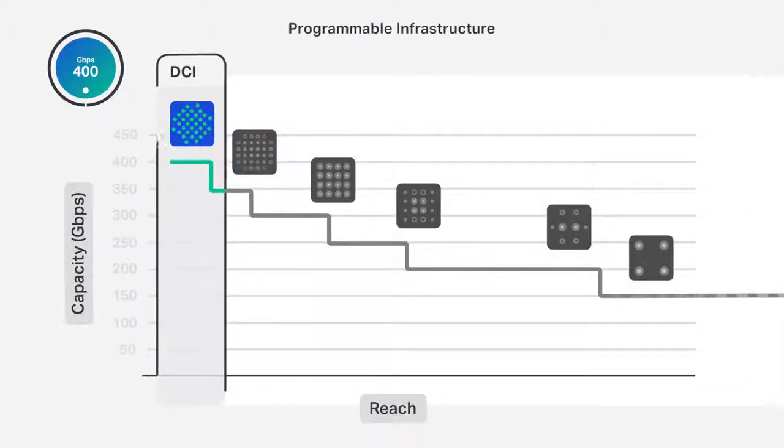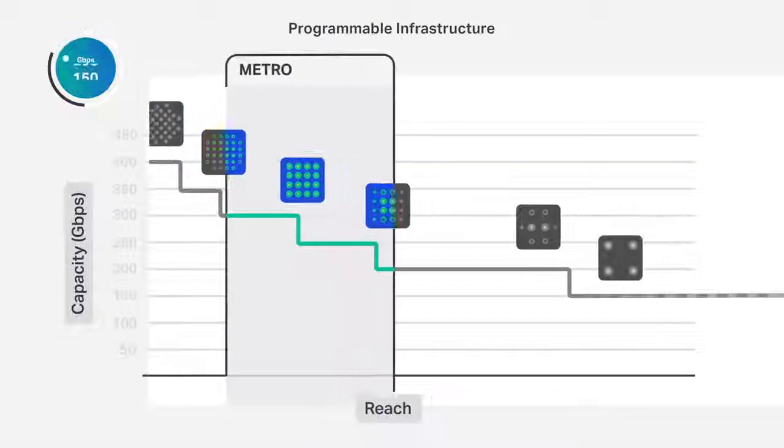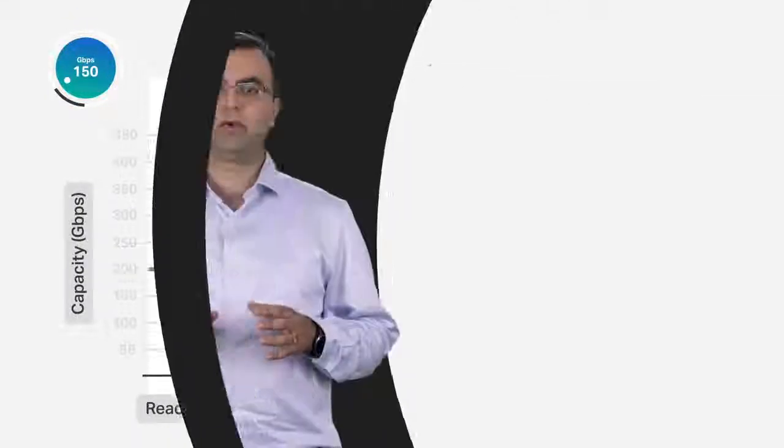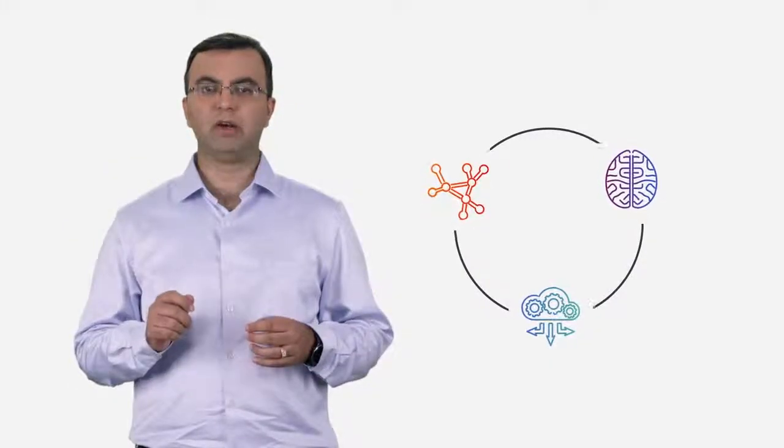This means that operators can tune the channels to optimal capacity for an application from DCI to Metro to Trans-Pacific or submarine applications. The ability to gain real-time access to network performance data and tune a channel to optimal capacity for that specific path and network margin is critical for extracting maximum efficiency out of your network.